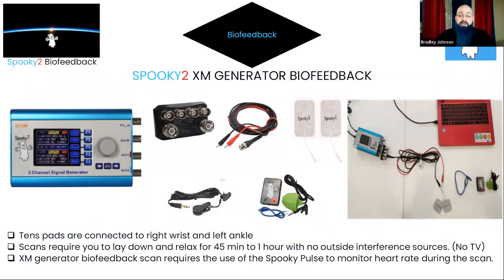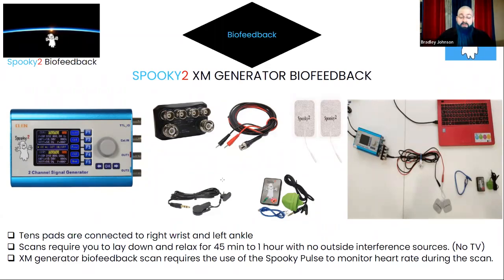The naming structure you give the saved file is how you'll locate it in programs later. You'll also need to turn off your TV and any outside RF interference sources, and lie completely flat since movement impacts heart rate and scan accuracy. The scan takes anywhere from 45 minutes to an hour. Once saved, the results display on screen — you give them a name, find them in the Spooky 2 database, and run or create your own programs with those results.